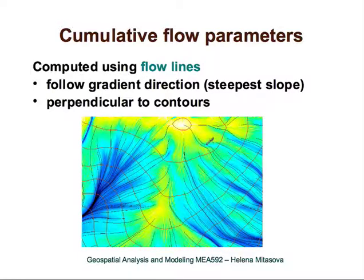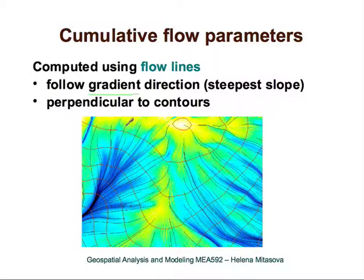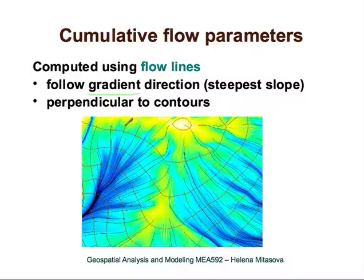What are flow lines? Flow lines are lines that follow gradient direction. This is a vector that follows the steepest slope, and these lines are perpendicular to contours. You can see a few of these flow lines as they are generated from centers of grid points. They are perpendicular to contours and they follow the steepest slope.